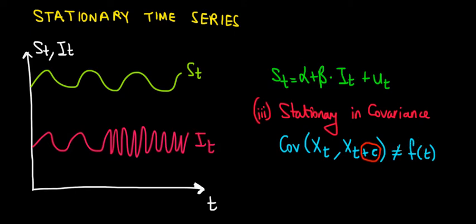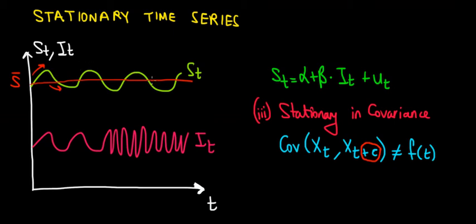Let's see how that looks graphically, because this math is going to make sense. We have the relationship between sales and inventory across time. What we can notice is that sales fluctuates around a certain value — that's our mean, our average sales value. It fluctuates above and below it in a constant manner, so the stationary variance assumption holds and the covariance is also constant.